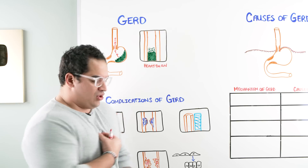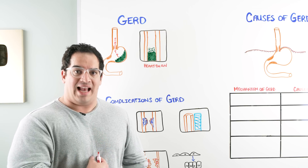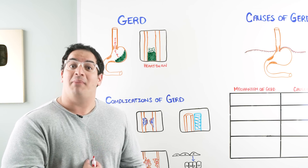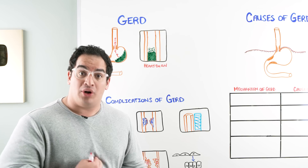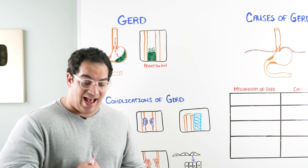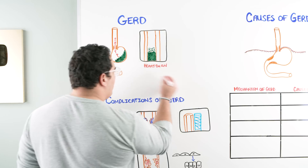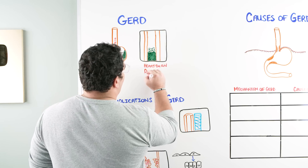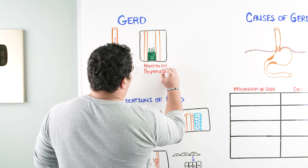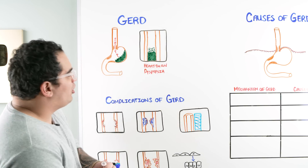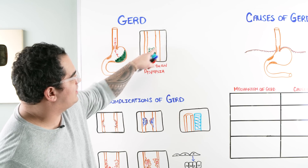Because the esophagus extends down to the epigastric level, you may also have epigastric pain — we call this dyspepsia. So two very common manifestations are heartburn and dyspepsia, because the hydrochloric acid is coming up into the esophagus causing burning and inflammation.